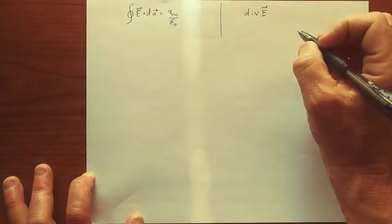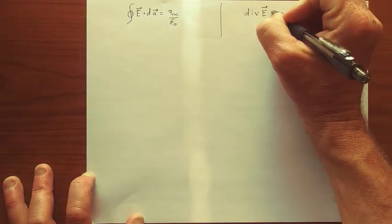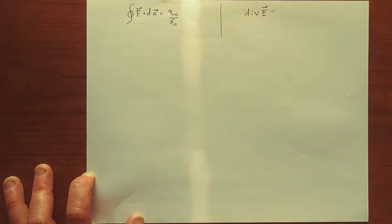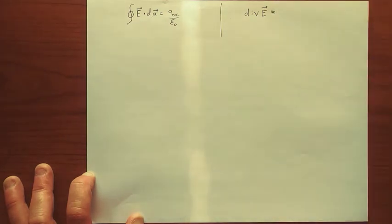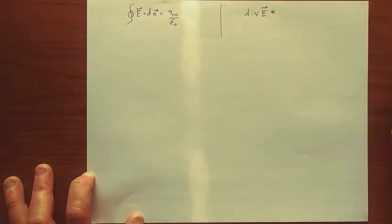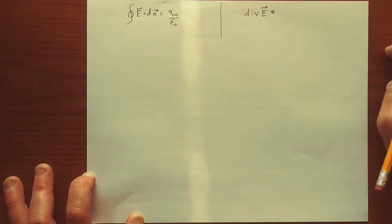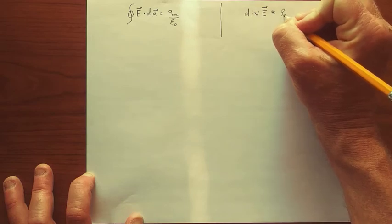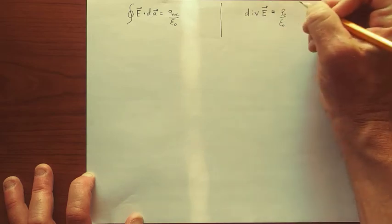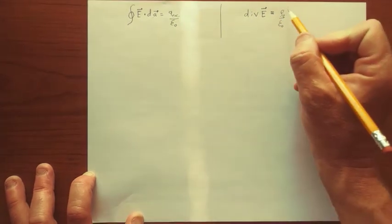So the differential version of Gauss's law for electric fields says that the electric field has a divergence, which means that in some sense it changes radially, it diverges radially away, and it depends on the charge density. So we go from charge to charge density, from the integral version to the differential version.